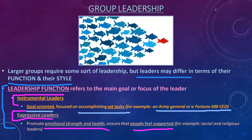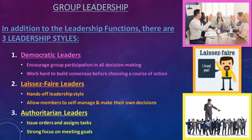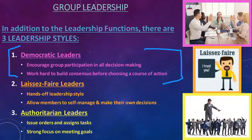We'll also look at three different leadership styles. Number one — most recognizable to us — is a democratic leader. Democracy is all about everyone getting a vote, some say in decisions. A democratic leader will constantly encourage group participation in decision-making and try to come to a consensus within the group — whatever the majority decides is what the group will go with.